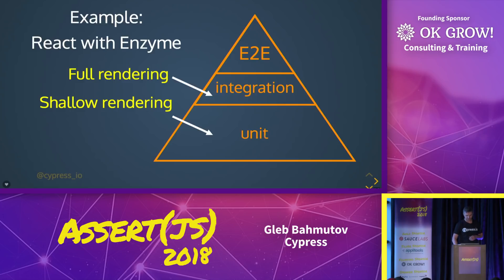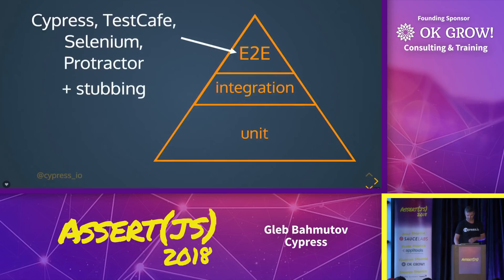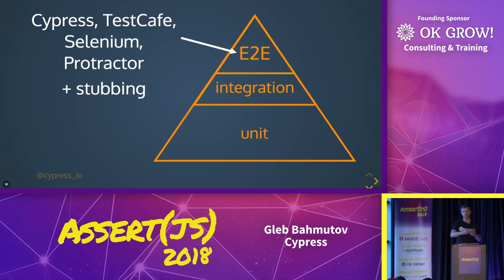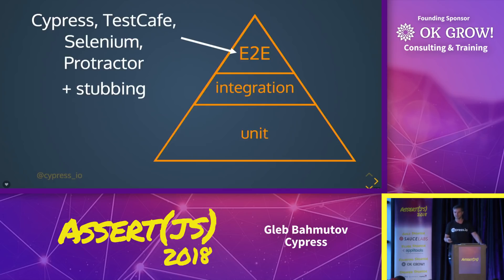React with Enzyme has both modes — you can shallow render a component or you can render a full component with all children rendered. But once you move to end-to-end, that's where things are really tricky. And the best tools right now, aside from Cypress, are here. We all love to laugh at Selenium, but it actually launches the real browser. You have full browser APIs, so you don't have to chase JS DOM bugs — you just have to work around browser bugs. But you still need a little bit of stubbing. If you're testing Amazon checkout, you don't want to make a payment of a million dollars — you probably want to stub that payment call. So you do need a full browser and some additional testing tools.